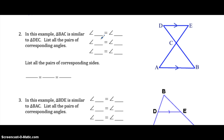In example two, there are Z-patterns that you have to look at. Because of the Z-pattern, angle D is equal to angle B — D and B are the first letters. Angle E is equal to angle A because of the Z-pattern. E is the second letter written and A is the second letter written.